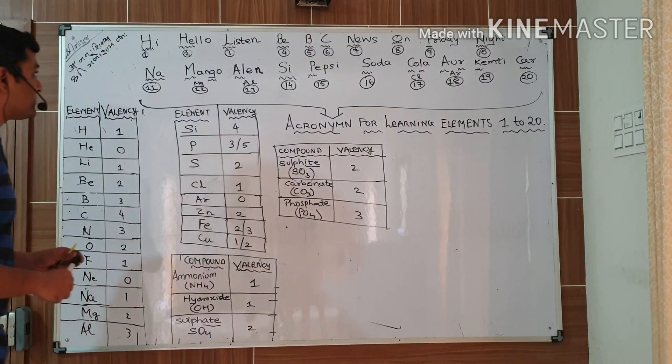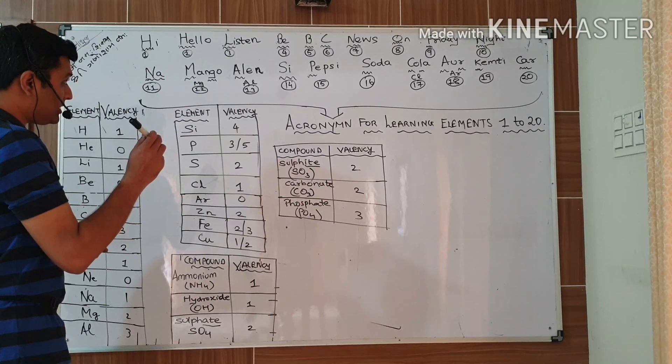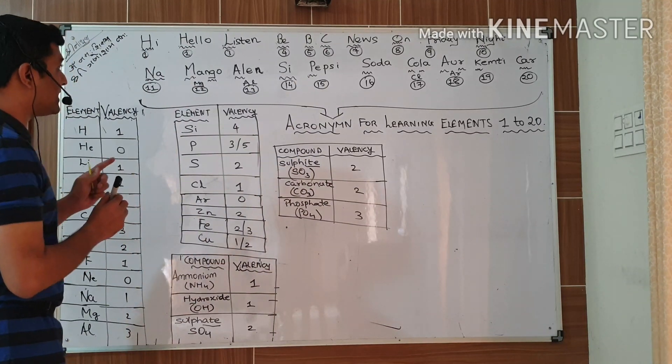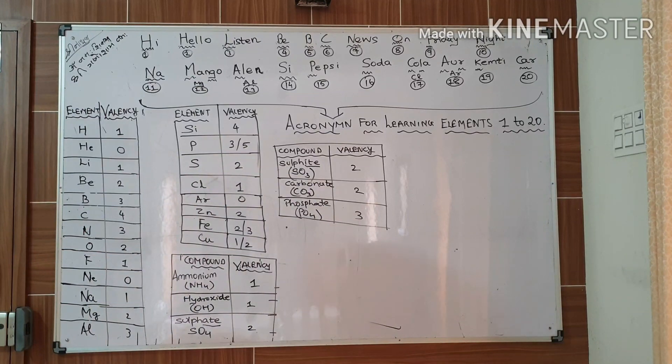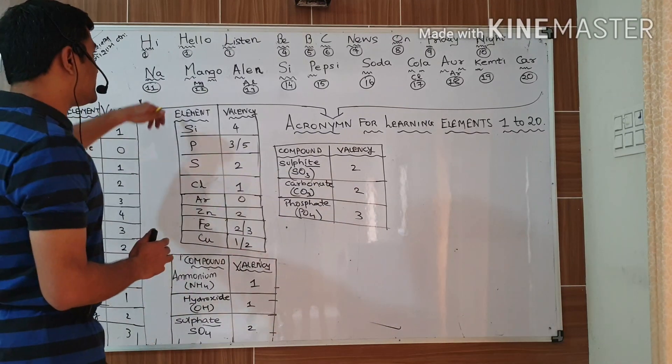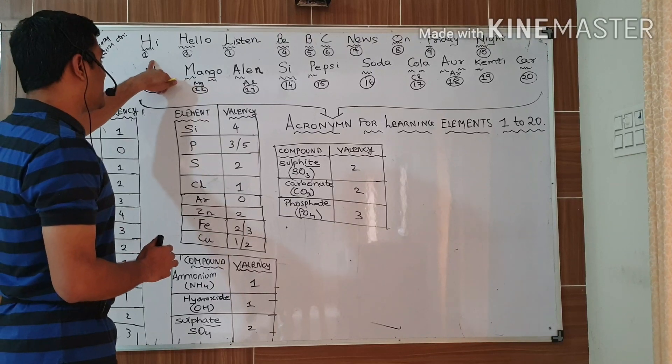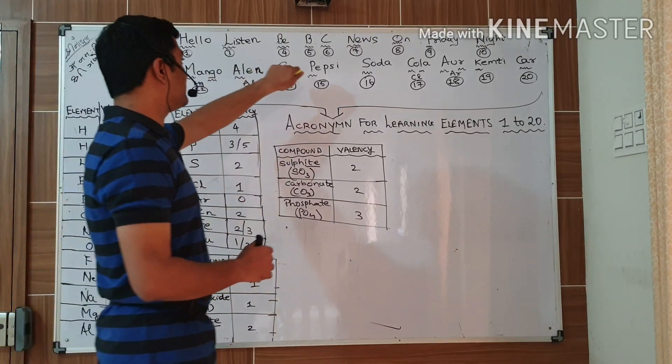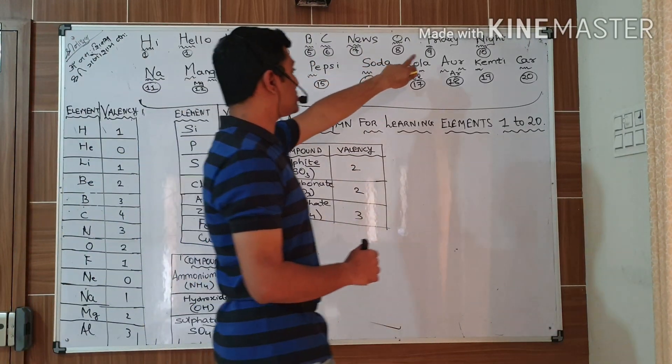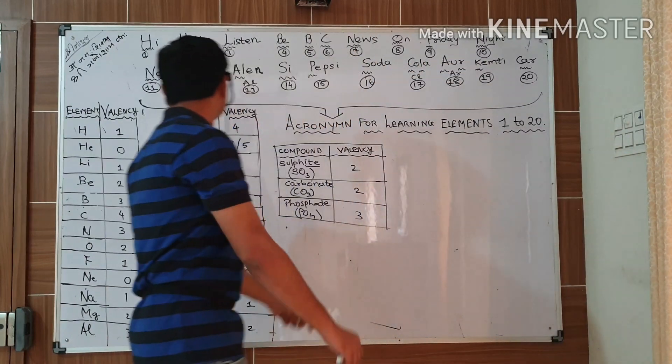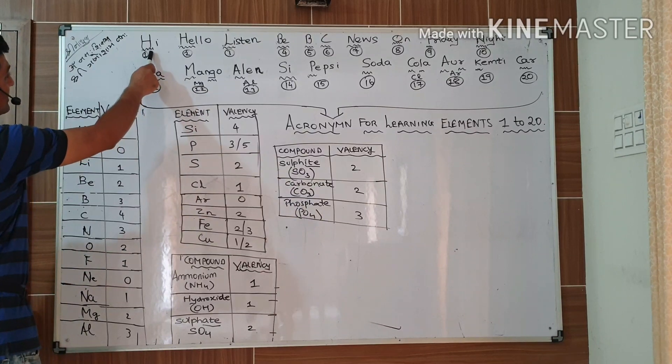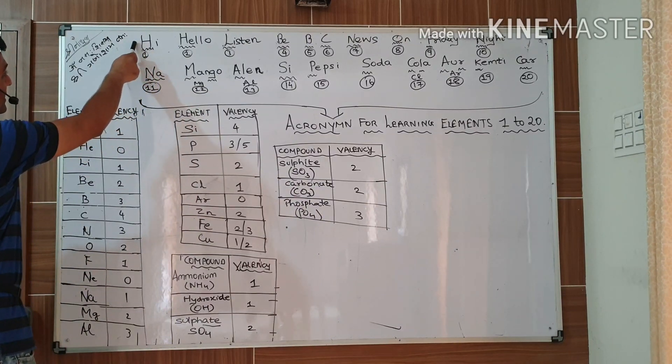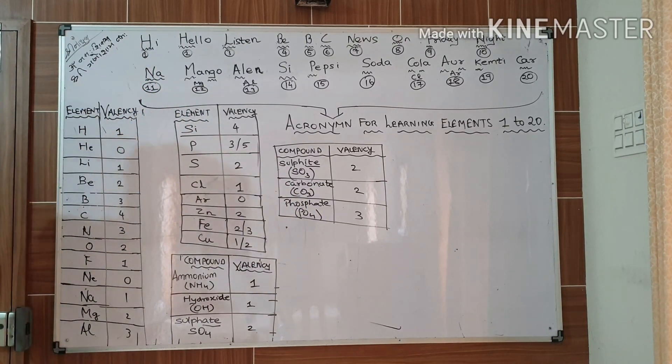I have written two statements to understand the valency as well as atomic number of specific elements. So Hi, Hello, Listen, BBC News on Friday Night. What does this statement mean? See, concentrate on the capital letters. Here, capital letter H stands for hydrogen, that is atomic number 1.